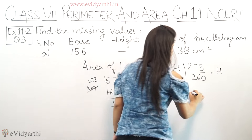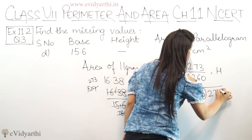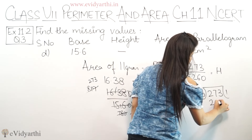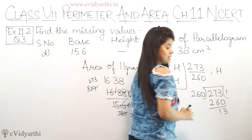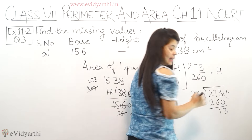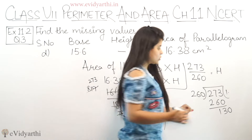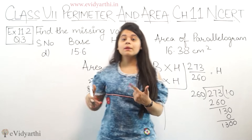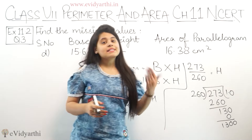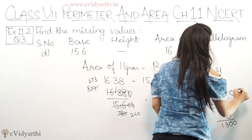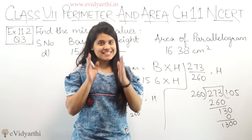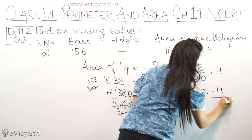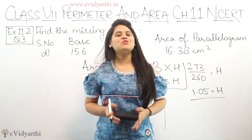The difference between them shows it won't go by any table, so we have to divide. 260 divided by 273: since 273 is already there, we use 1. 1 times 260 is 260. This gives remainder 13. Decimal. Then 130 — this is also smaller than 260, so we put zero again. Then 1300. I know that 260 into 5 is 1300. So the answer comes as 1.05. This means h equals 1.05, which is the height. So this was the last part, and this was question number 3.